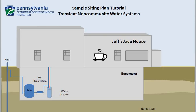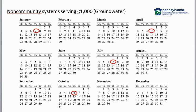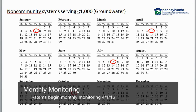Today I'm going to show you how to properly fill out the sample siting plan for a coffee shop that has its own groundwater well and UV treatment. The coffee house, like many restaurants with their own well, is considered a transient non-community water system. This type of system has traditionally collected one coliform sample per quarter, but will now be collecting one sample per month under the new rule requirements.